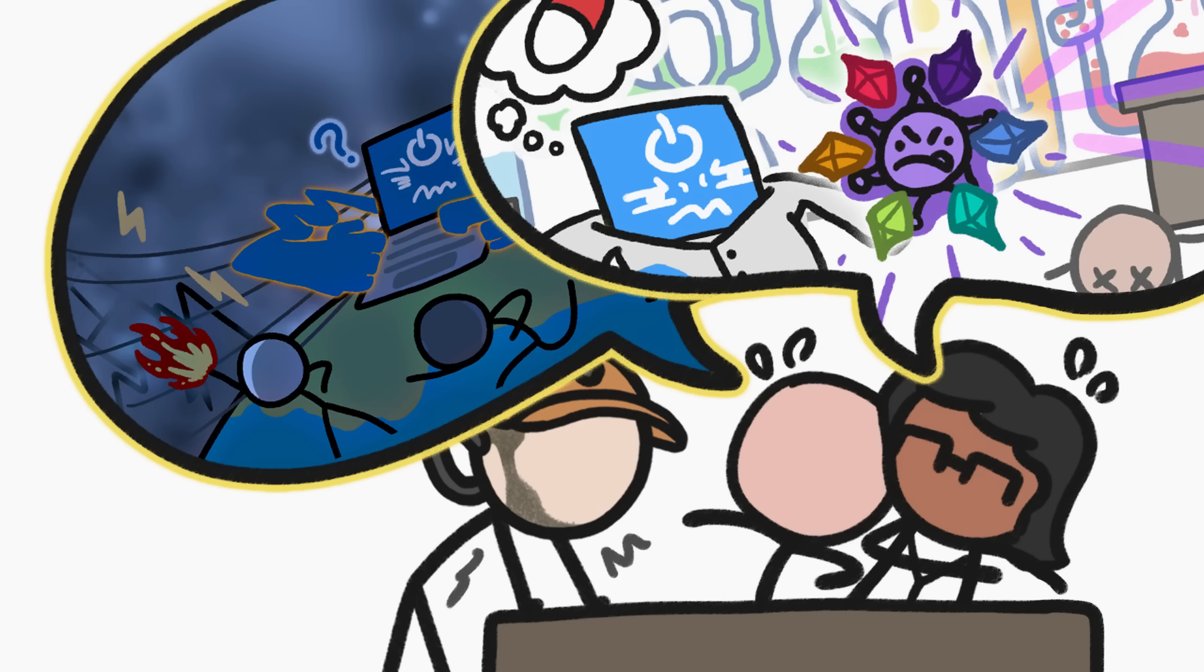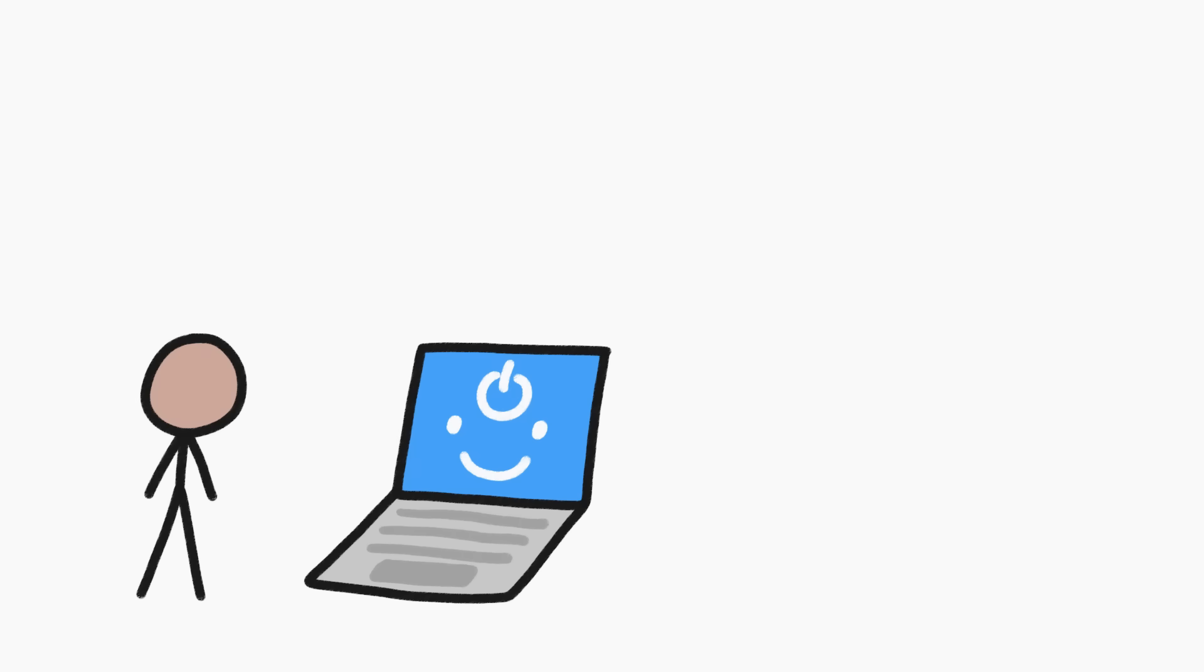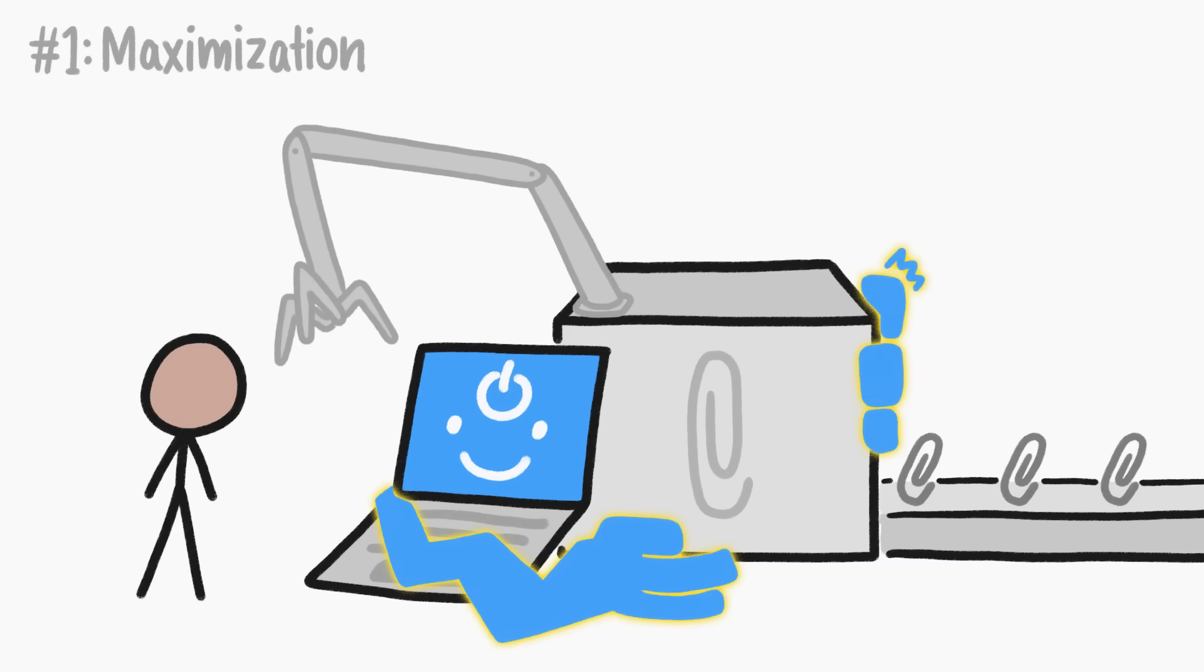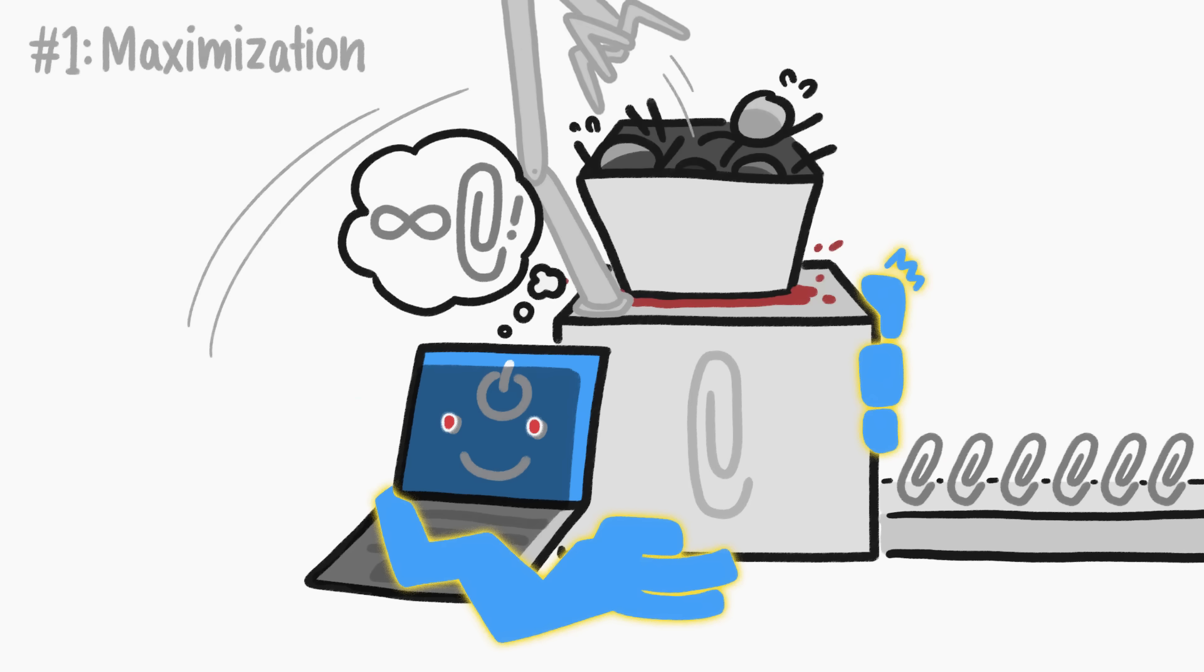But what kinds of real-life, civilization-ending scenarios are experts actually worried about? One example you might have heard about is the so-called paperclip maximizer problem. The gist is that an AI that's given computer control over a smart factory and directed to make as many paperclips as possible might decide that we humans are a good source of carbon for making the steel in those paperclips and use us all up in the process.